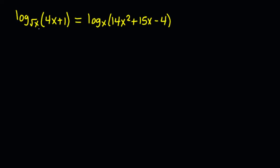We are faced with different bases because the base on the left hand side is root x and on the right hand side is just x. So what we are going to do is apply a general property of logarithm which states that log to the base of a of b is given by log base 10 of b divided by log base 10 of a. That is what we are going to apply in solving this question.